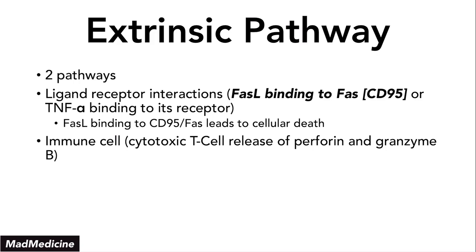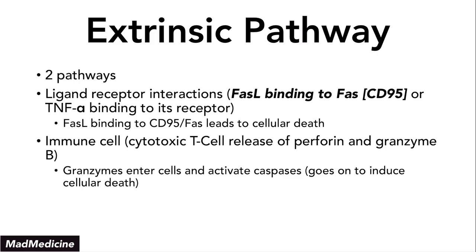When cytotoxic T cells release these enzymes, these cytotoxic enzymes actually enter the cells themselves and activate caspases. They also activate the same mechanisms needed to degrade the DNA — activating the endonucleases and degrading the cytoplasm. So the two pathways are: first, the ligand-receptor binding pathway with FAS ligand plus CD95, or TNF-alpha binding to its receptor, both leading to apoptosis.